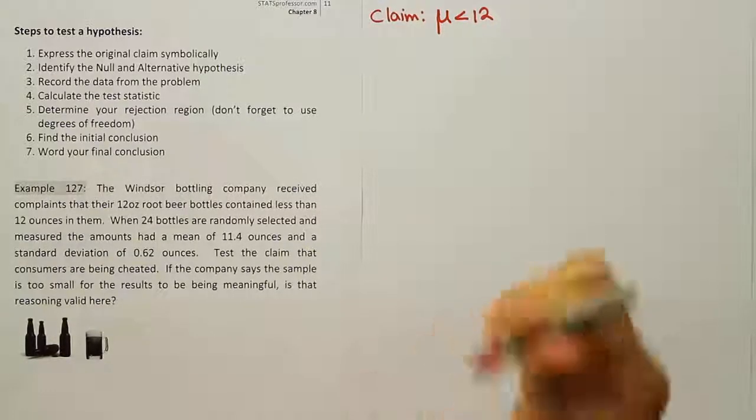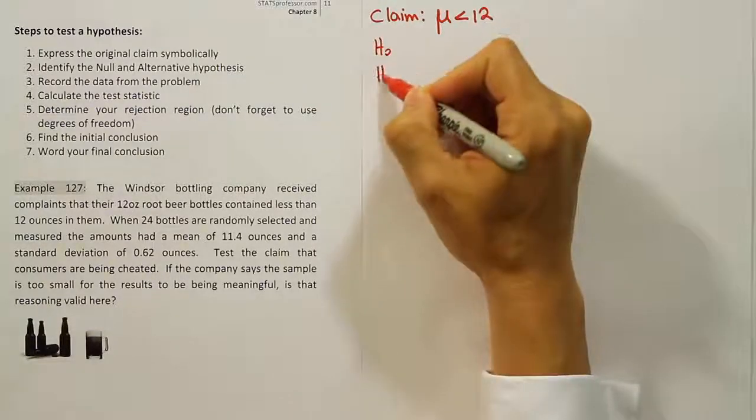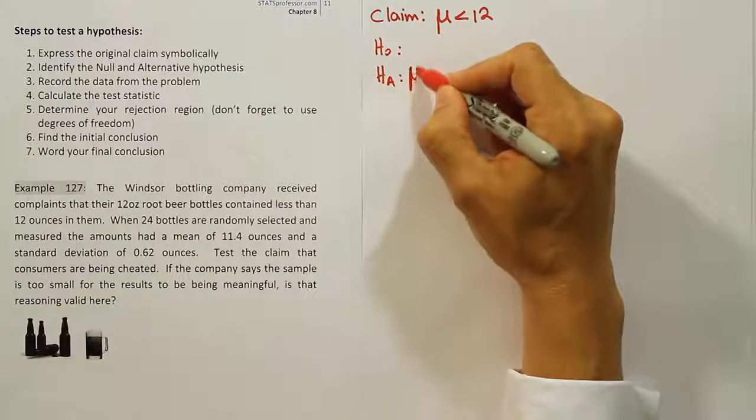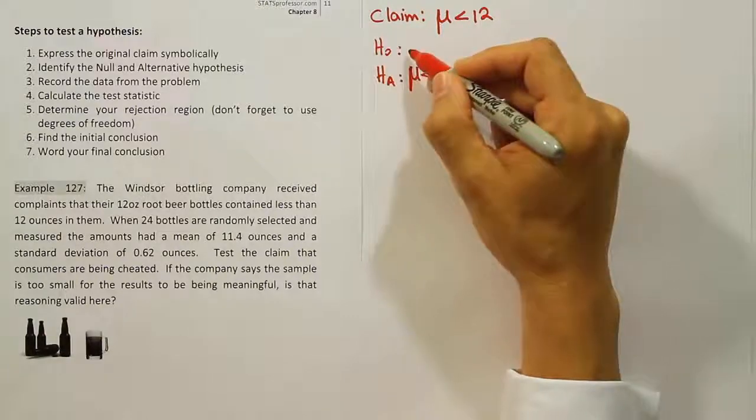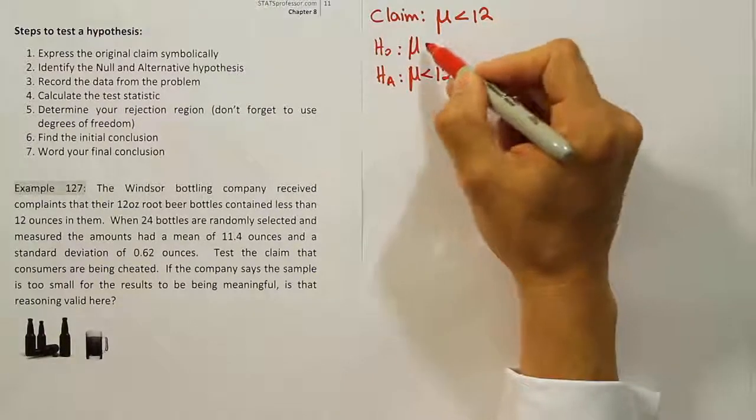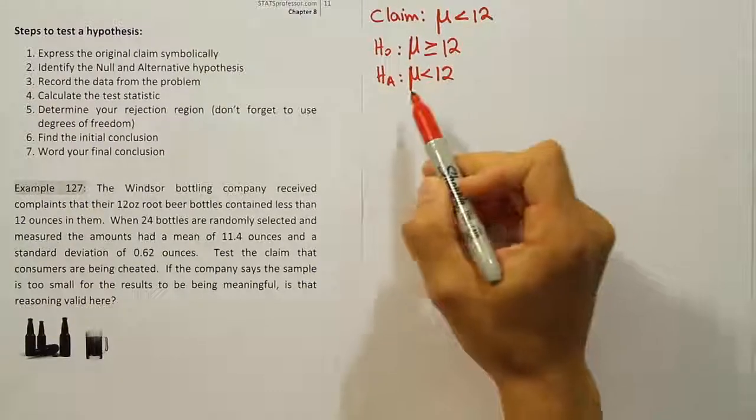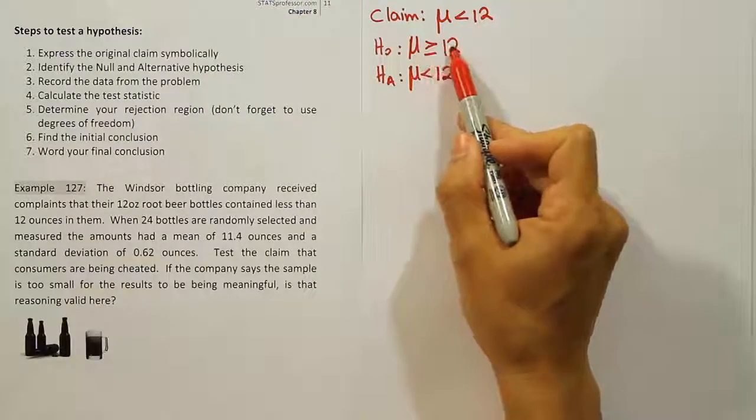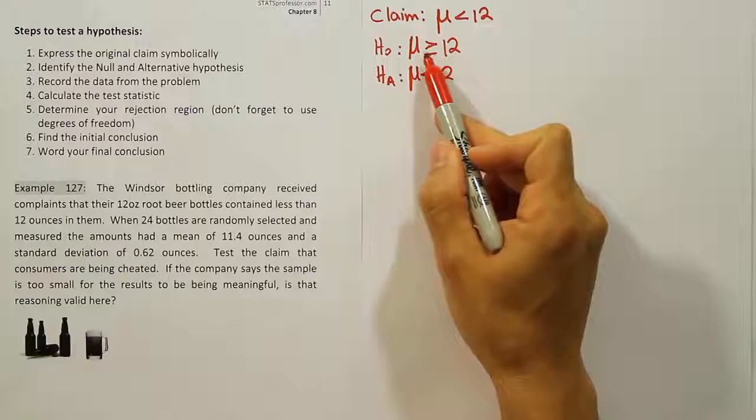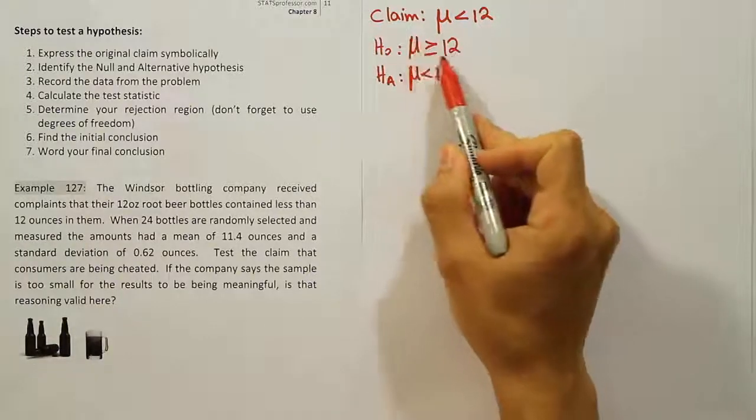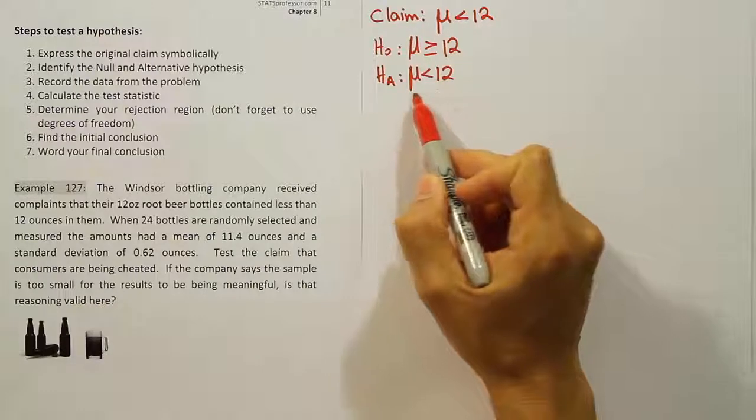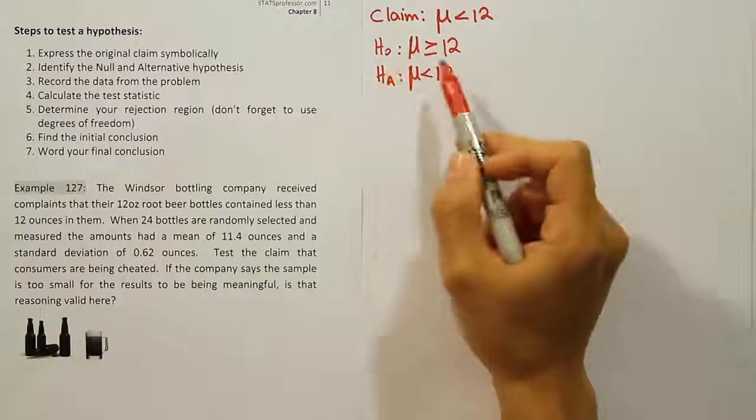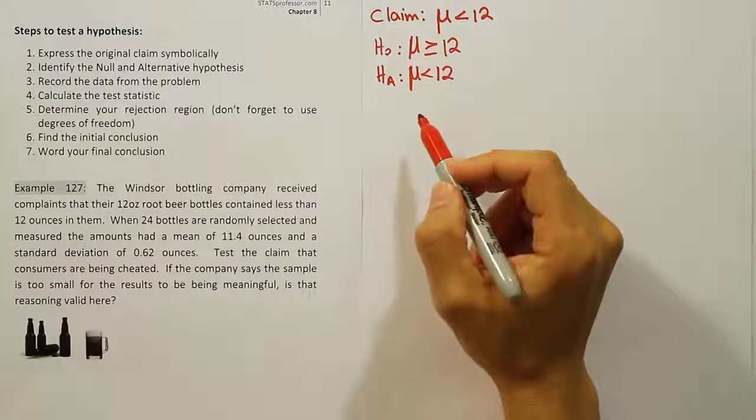Now that we know that, our next step is going to be to get H₀ and Hₐ, so the null hypothesis and the alternative hypothesis. Looking at the symbol involved in the claim, I'm going to say the claim and Hₐ in this example are the same, and that means that the null hypothesis is the opposite of that, so greater than or equal to. This basically boils down to the consumer group's argument versus the company's argument. The company is trying to say we give you at least 12 ounces. And then Hₐ is saying the consumer group is arguing that the mean is less than 12. So that's the total dispute, and we're going to try to settle it by figuring out whether H₀ is true or not.